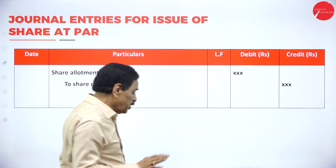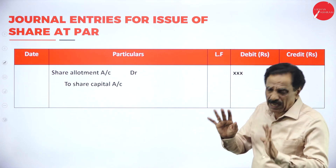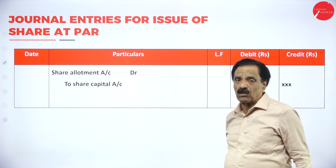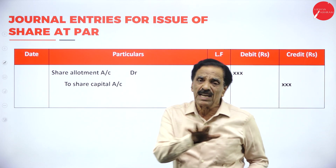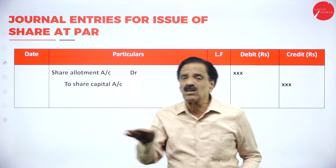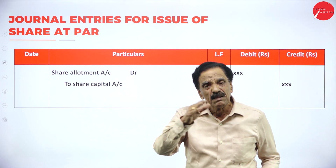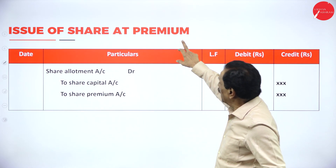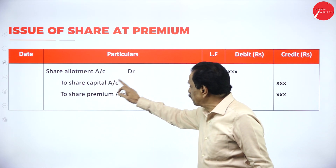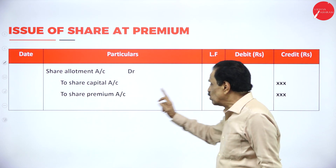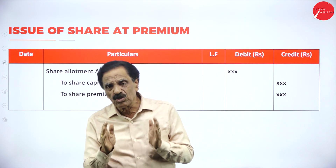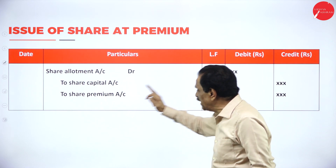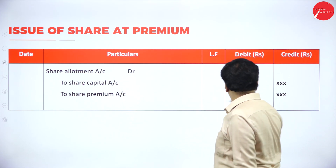Now, the journal entries. For share issued at par, the entry is: Share Allotment Account Dr. to Share Capital Account. For share issued at a premium, the entry is: Share Allotment Account Dr. Rs. 120 to Share Capital Account Rs. 100 and to Share Premium Account Rs. 20. This assumes face value of Rs. 100 issued at Rs. 120 with a premium of Rs. 20.